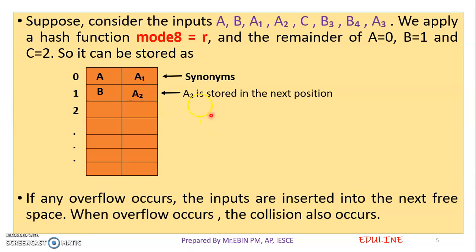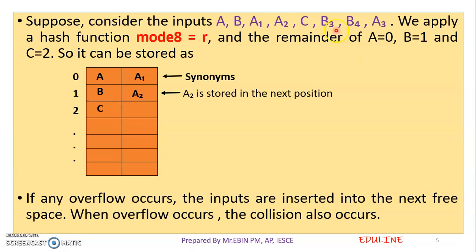If I apply the result and the remainder is 0, now we need to fill the bucket. I need to apply it to A2, generate the address, and save it. Next is C — C gives 2, so we need to save it in the second bucket. This is B3; C is 1, so we fill the bucket with B3. Next is B4 — it's free space, so we save it. Now A3 is next; we save A3.